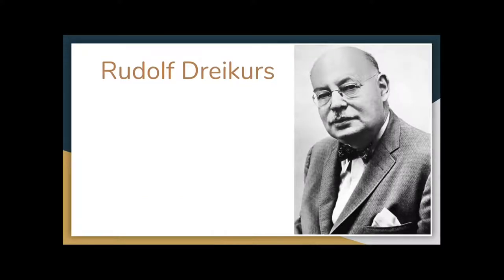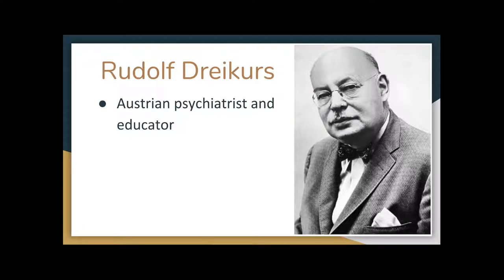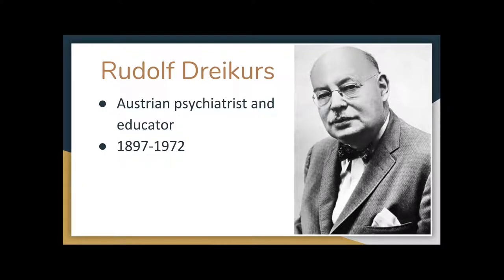Rudolf Dreikurs was an Austrian psychiatrist and educator who developed Alfred Adler's system of individual psychology into a method for understanding the purposes of behavior in children. He looked at how to stimulate good behavior with rewards and to try to prevent bad behavior with punishments. He was born in 1897 in Austria-Hungary and died in 1972 in Chicago.